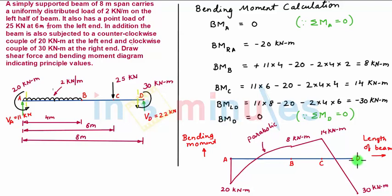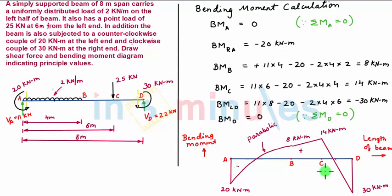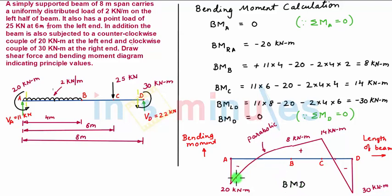Bending moment at actual point D is zero, so we connect this point accordingly. With this, our bending moment diagram is complete. You can see that some part of the beam is under positive bending moment whereas a small part is under negative bending moment.